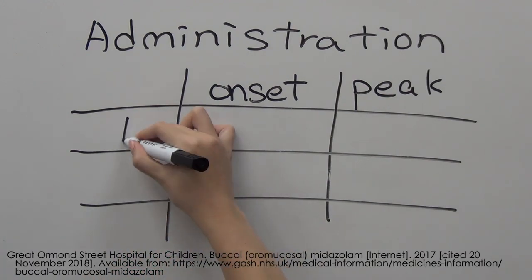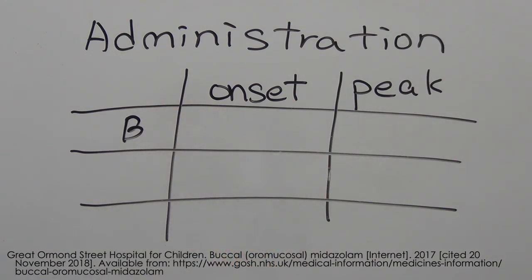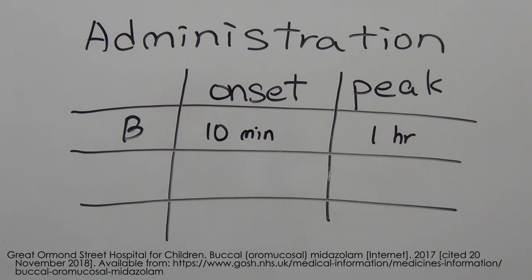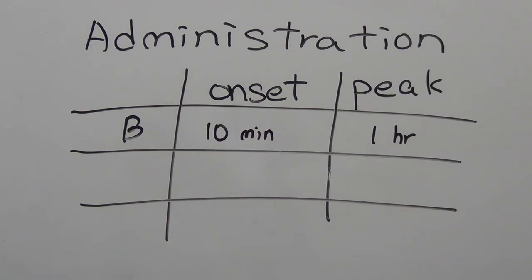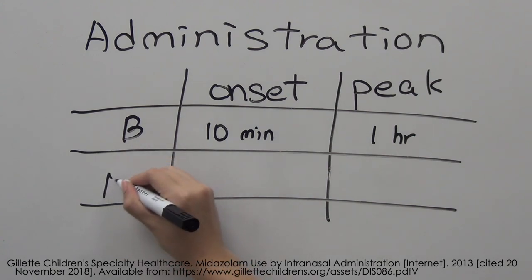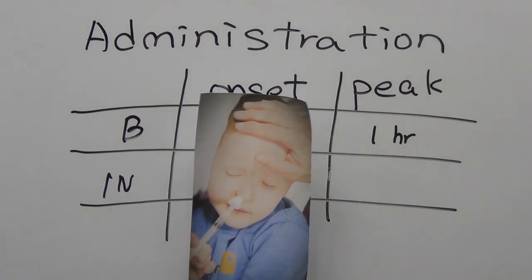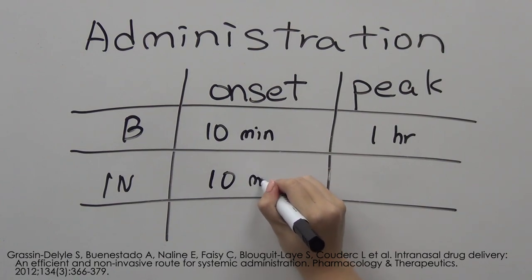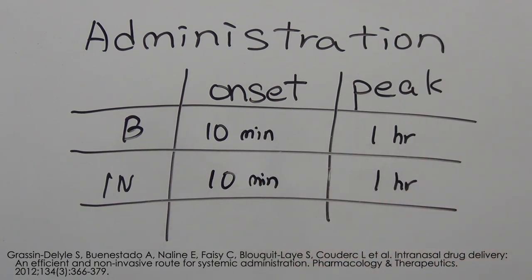Buccal administration is where a solution of midazolam hydrochloride is applied to the side of the gums and cheeks of the mouth, allowing direct absorption into the bloodstream. It has an onset of action of 10 minutes and peaks after 1 hour. It is typically used to treat children as it is easy to administer and less invasive. Limitations are that the patient may swallow the medicine, causing choking. Intranasal administration is when a midazolam solution is sprayed up the patient's nostril and absorbed into the bloodstream through the capillaries. It has an onset of action of 10 minutes, peaks after 1 hour, and is used in both paediatric and adult patients. An advantage is that it is non-invasive and has higher bioavailability than the oral route due to avoidance of the first-pass effect.